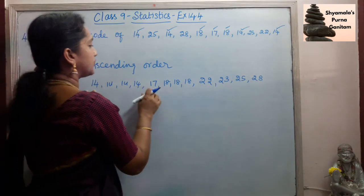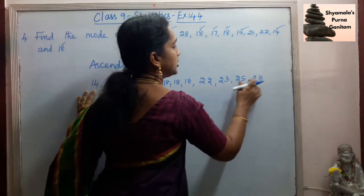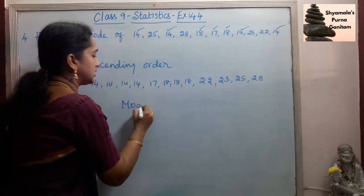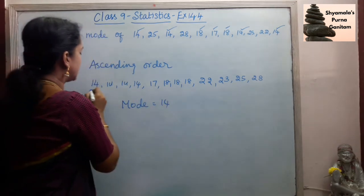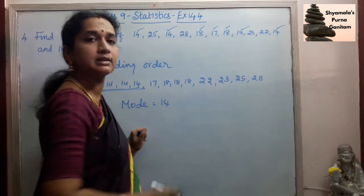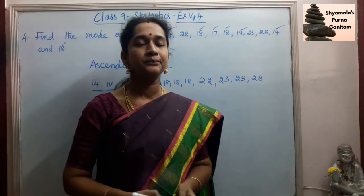So 1, 2, 3, 4, 5, 6, 7, 8, 9, 10, 11, 12. 12 datas we are given. So the mode for the given data is 14, because 14 is repeated 4 times. So mode is 14 for this. Thank you.